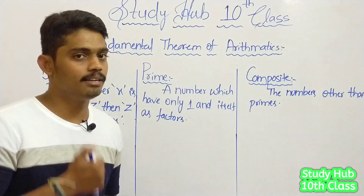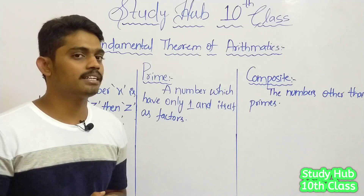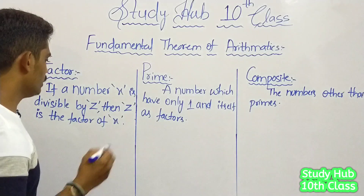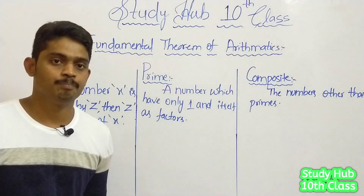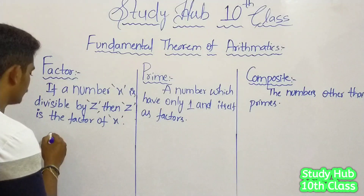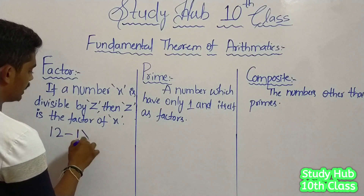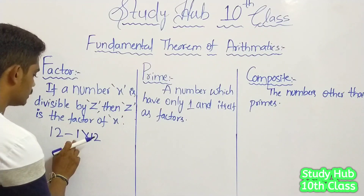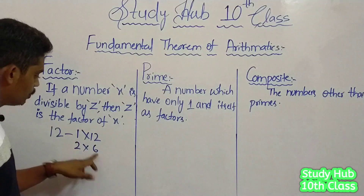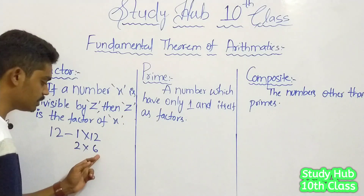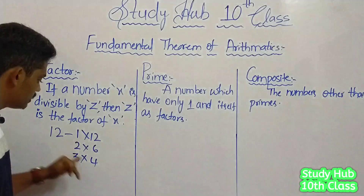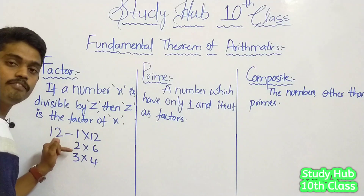If we take 12: 12 is divisible by 2, so 2 is a factor of 12. 12 is also divisible by 3, so 3 is also a factor of 12. What are all the factors of 12? 12 is divisible by 1, 2, 3, 4, 6, and 12 itself. In the multiplication table: 1 × 12 = 12, 2 × 6 = 12, 3 × 4 = 12. So 12 is divisible by all of these — 3 and 4 are also factors of 12.